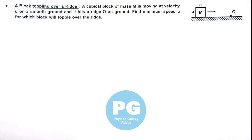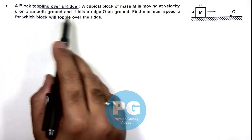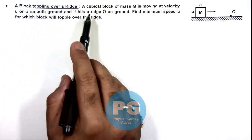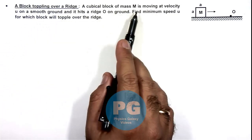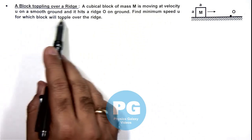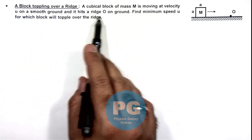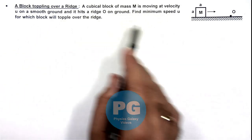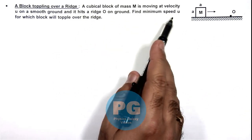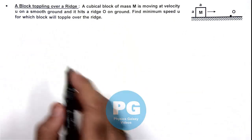In this illustration we'll analyze a block toppling over a ridge. We are given that a cubical block of mass M moving at velocity u on a smooth ground hits a ridge O on ground. We are required to find minimum speed u of the block for which it will topple over the ridge.